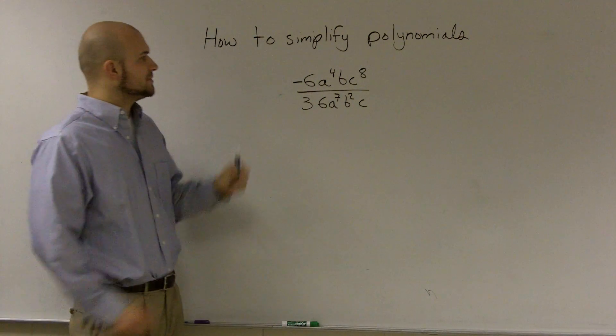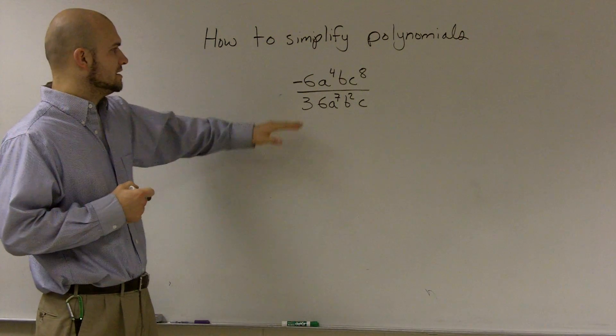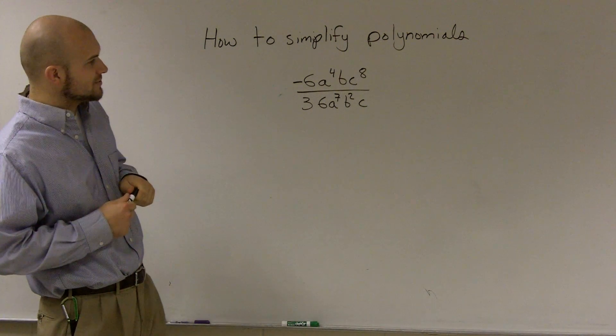All right, what I'd like to do is show you guys how to simplify polynomials. Up here we have negative 6a to the 4th bc to the 8th, all divided by 36a to the 7th b squared over c.